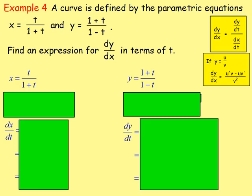Example 4. A curve is defined by the parametric equations x equals t over 1 plus t, and y equals 1 plus t over 1 minus t. Find an expression for dy/dx in terms of t. X and y are both in terms of the third parameter t, so to get dy/dx we know that's dy/dt divided by dx/dt. We need to differentiate x with respect to t — and we'd have to use the quotient rule here, because we've got one function in terms of t divided by another function in terms of t.